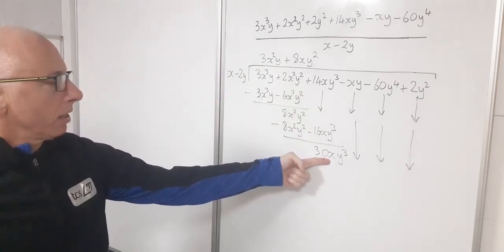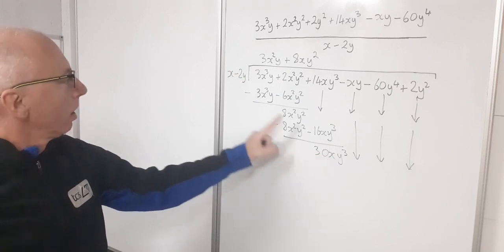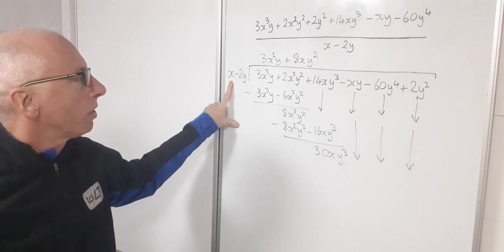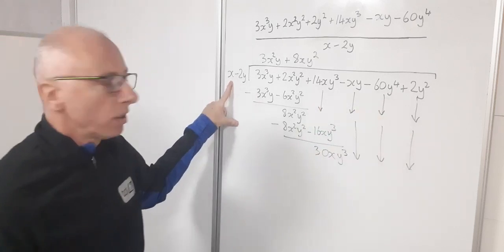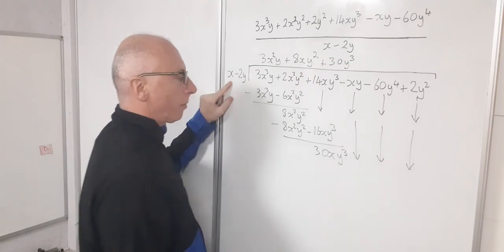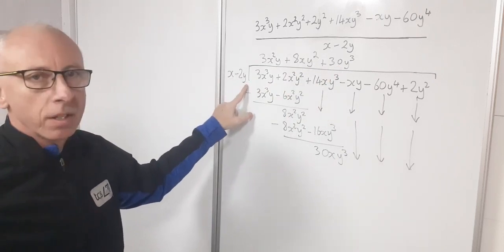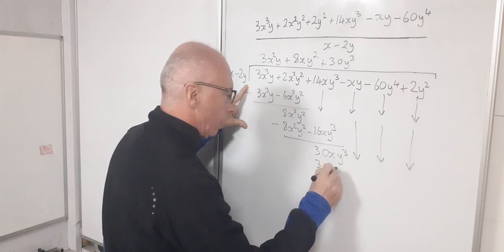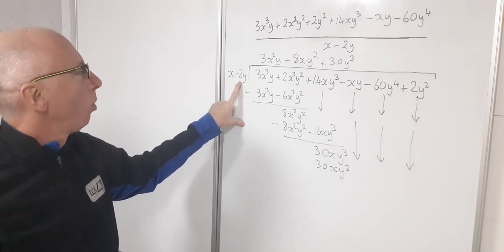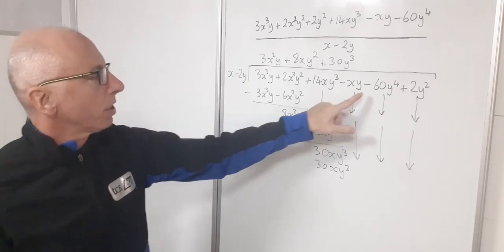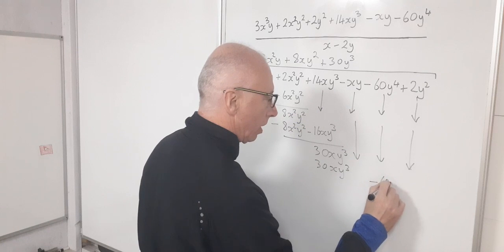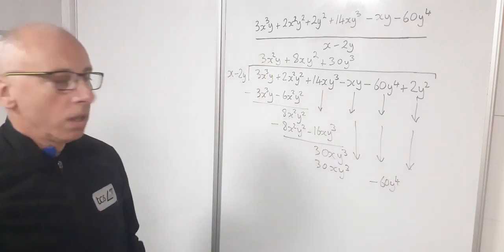So now this is my term that I need to think about: 30xy³. So divide that by x and I get 30y³. Now have I got a y³ in my results here? No. So I can just again write that where I would like. So I'm going to write here plus 30y³. And again distribute that with this term and then this term. So we'll get 30xy³, and then multiply that with that. I'm going to get minus 60y to the 4. And interestingly I have a minus 60y to the 4 here. So I'm going to write that in line with that one. So minus 60y to the 4.